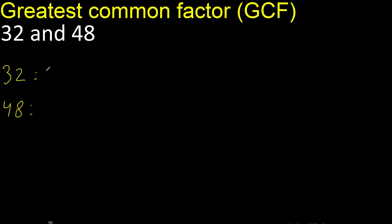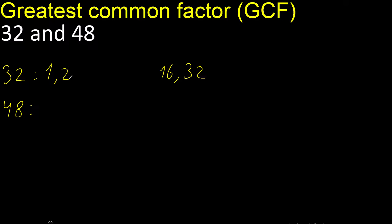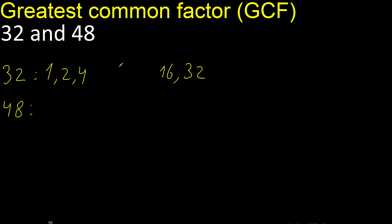Factors always start with 1. 32 divided by 1 is 32. Divided by 2 is 16. Cannot be divided by 3. Divided by 4 is 8.